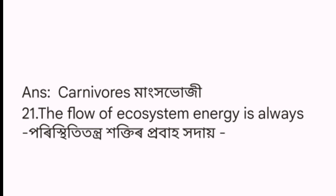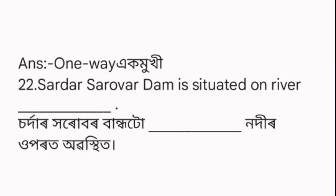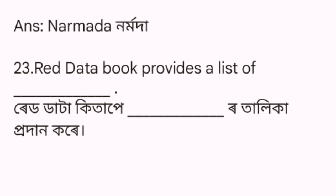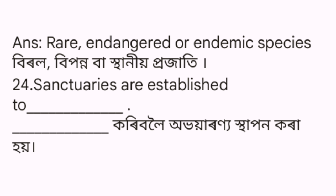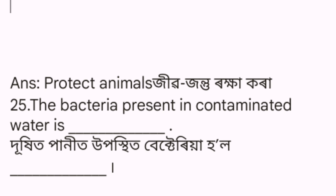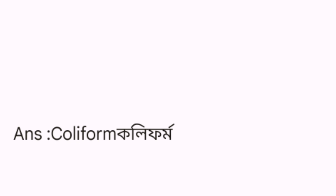Question 20: The answer is carnivorous. Question 21: The flow of ecosystem energy always occurs in one way — one-way. Question 22: Sardar Sarovar Dam is situated on the river Narmada. Question 23: Red Data Book provides a list of rare, endangered, or endemic species. Question 24: Sanctuaries are established to protect animals. Question 25: The bacteria present in contaminated water is coliform. That completes all 25 MCQ questions and answers.